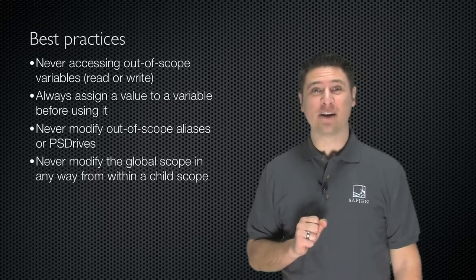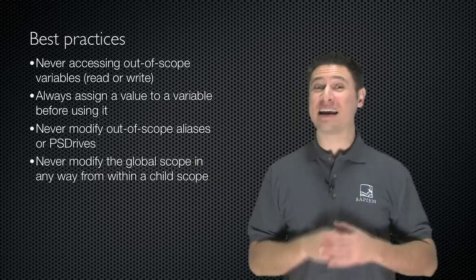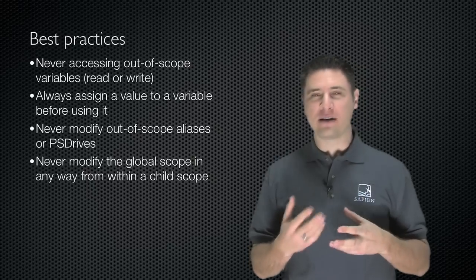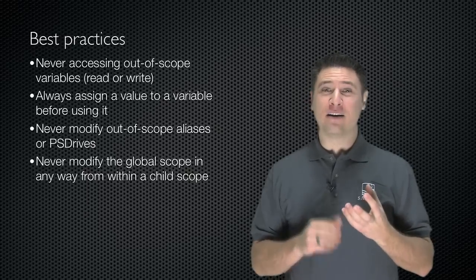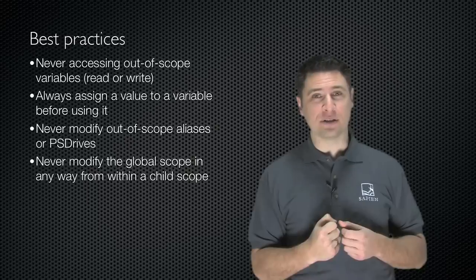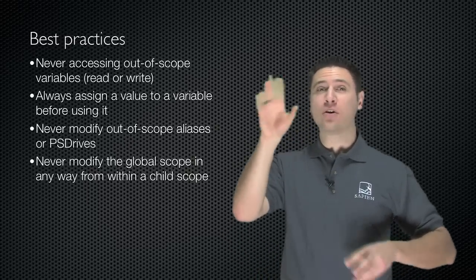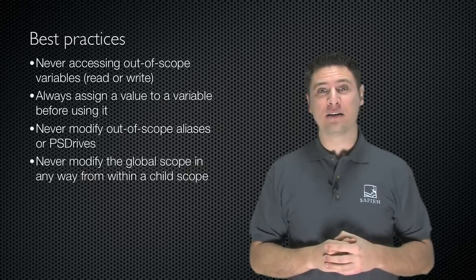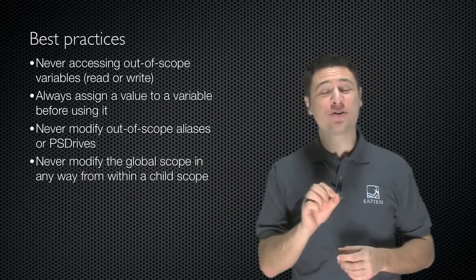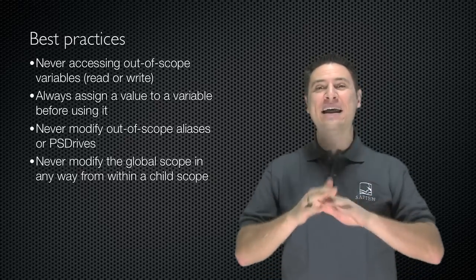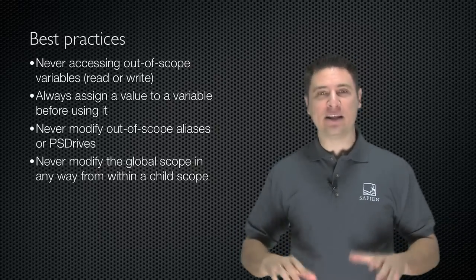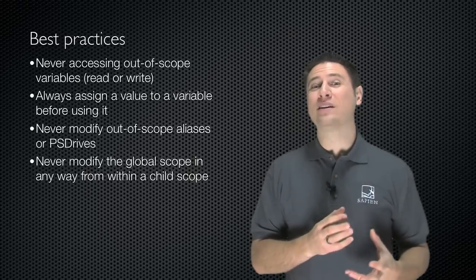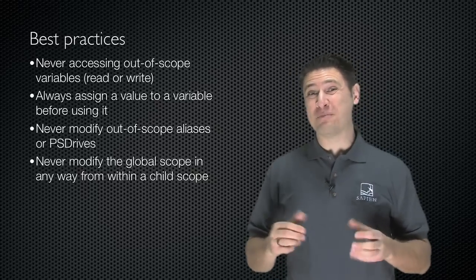Scope is a really easy way to get yourself in deep trouble really fast. So here are some best practices to stay out of trouble. First, never access out-of-scope items with variables or anything else unless you can avoid it. Always assign a variable a specific value in the current scope before you use it. That'll prevent PowerShell from wandering up the scope tree and grabbing some value that you might not have been expecting. Never modify out-of-scope aliases or PS drives. If you're changing something outside of the current scope, you don't know what else you might have an impact on. And never modify the global scope in any way from any child scope, because the global scope is permanent. You start modifying it, you don't know what other processes are relying on the global scope, and you don't know what you might be breaking.